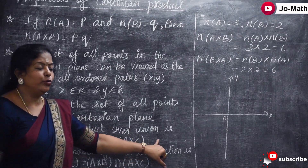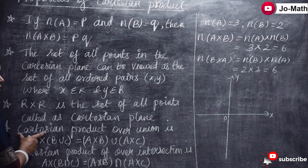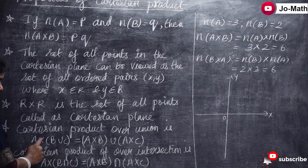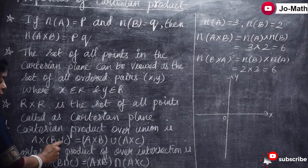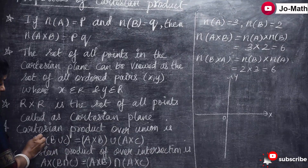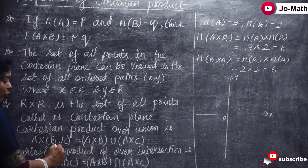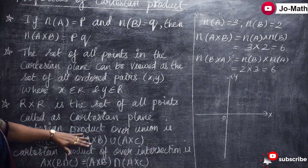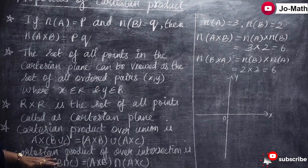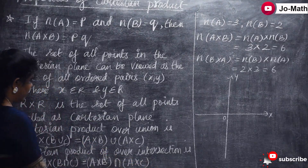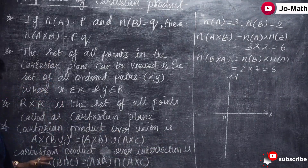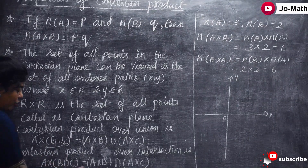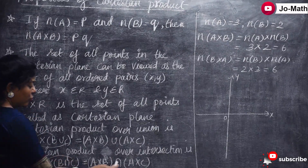The next property is the distributive property of Cartesian product over union. That is: A cross (B union C) equals (A cross B) union (A cross C). We distribute A across the union, giving A cross B and A cross C. This is the distributive property of Cartesian product over union and intersection.